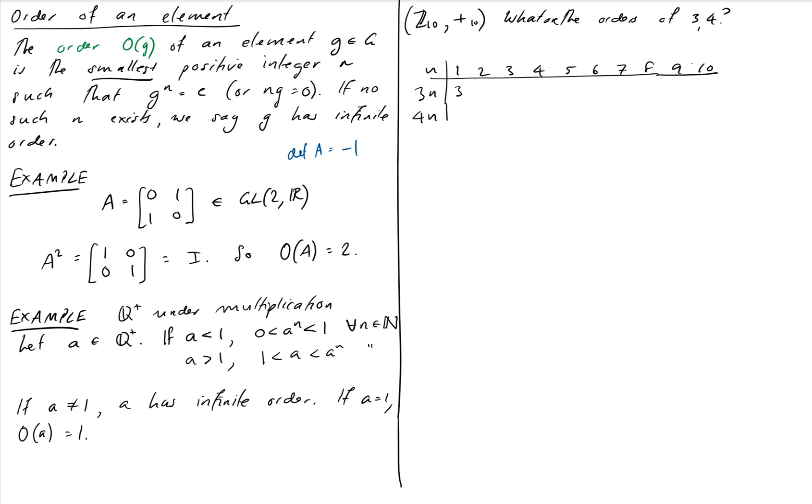So I'm just going to add 3s until I get 0. So 3×1 is 3, 3×2 is 6, 3×3 is 9, 3×4 is 12. Now we're in mod 10, so we go back to 2 by subtracting 10. Add 3 again, I get 5. Add 3 again, I get 8. Add 3 again, I get 1. Again I'll go mod 10. Add 3, I get 4. Add 3, I get 7. Add 3, I get 10, which is 0. So the order of 3 is 10.